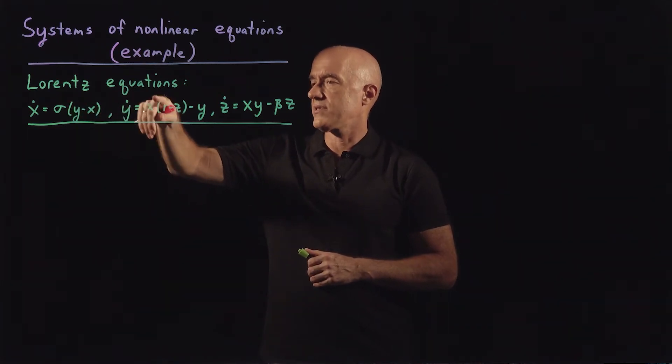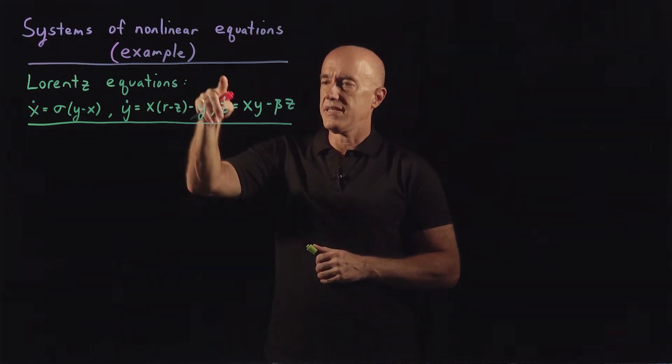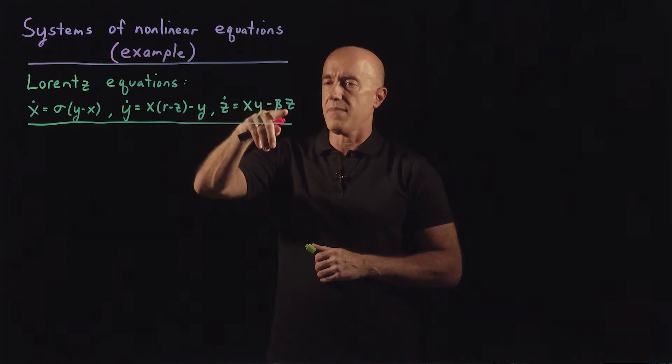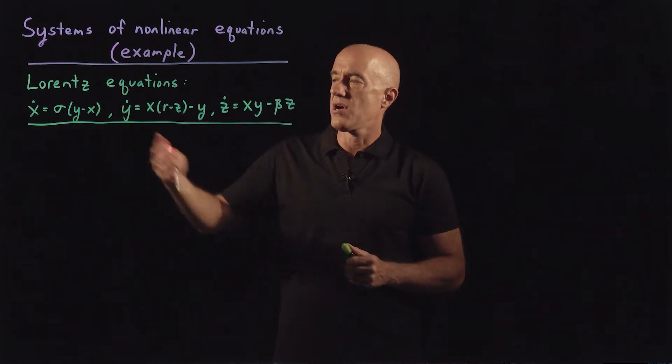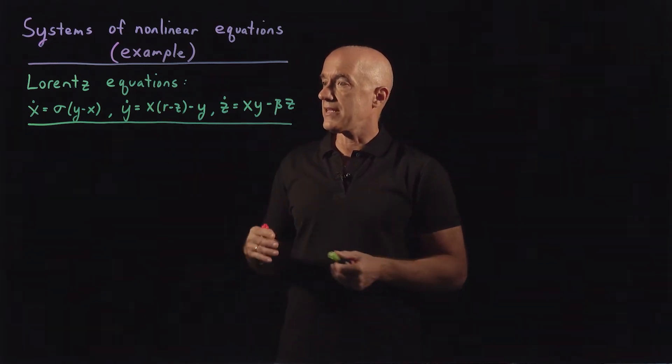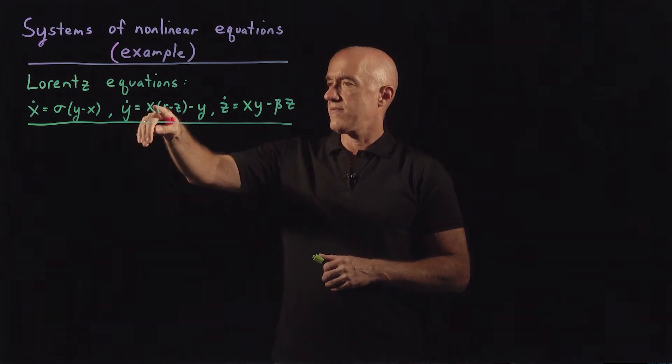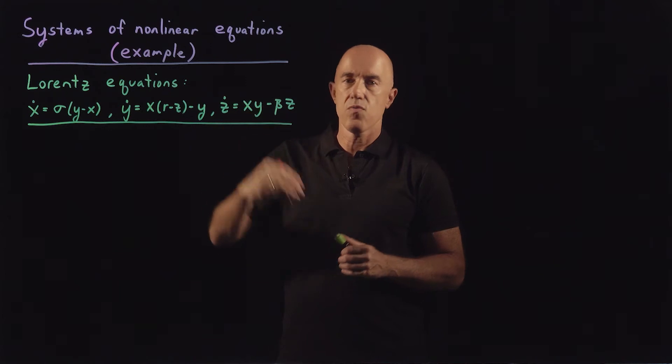Y dot equals x times (r minus z) minus y. R is a parameter. And z dot equals xy minus beta z. Beta is a parameter. So there are three parameters in this equation. These are nonlinear equations because of the x times z term and the x times y term.